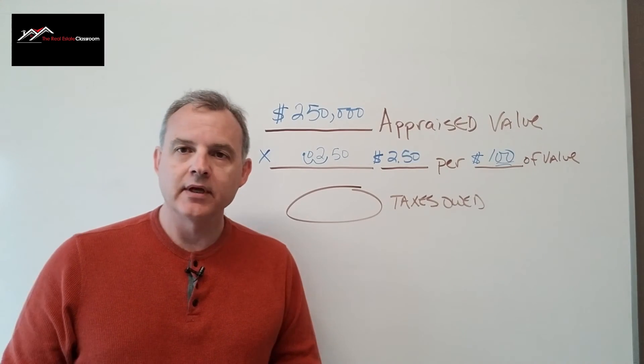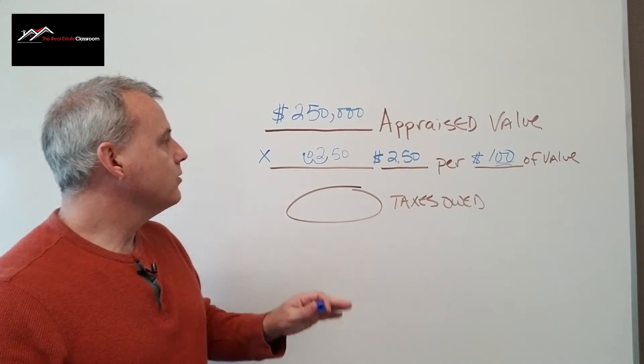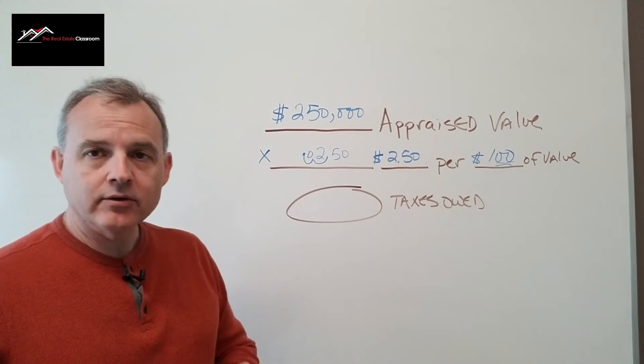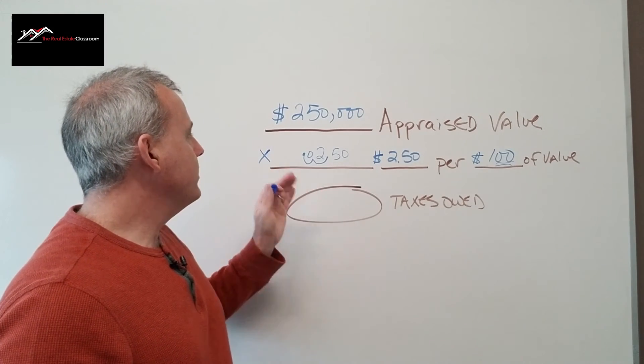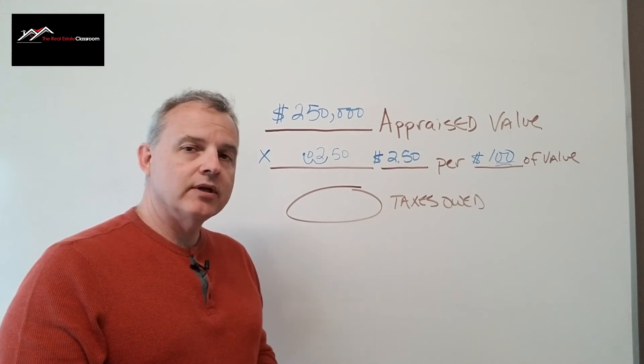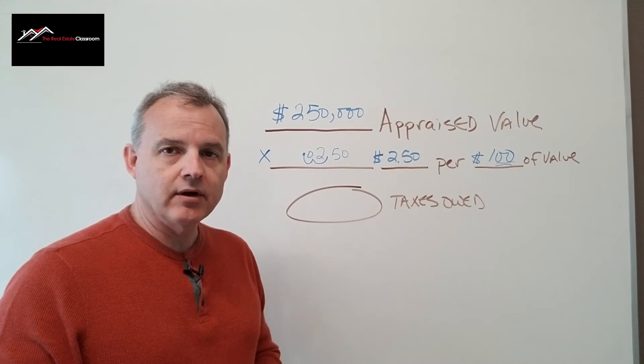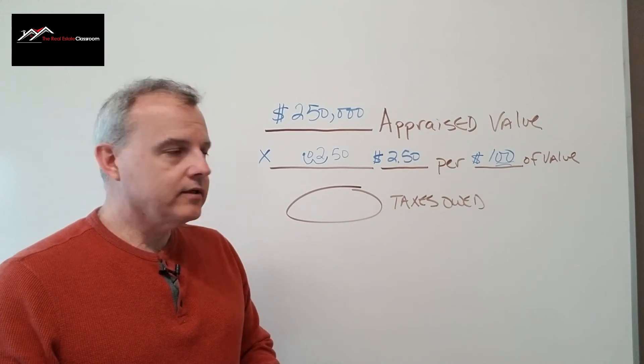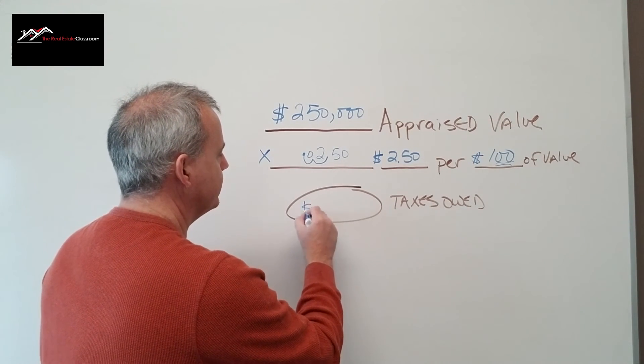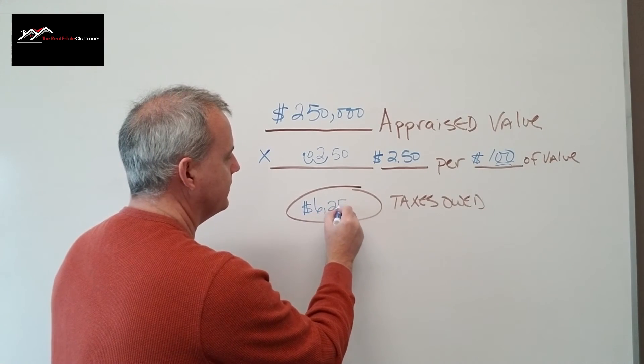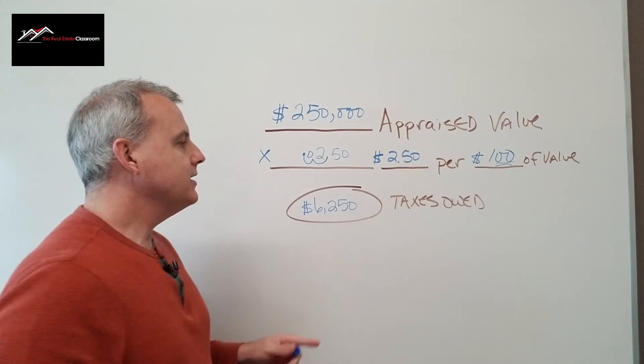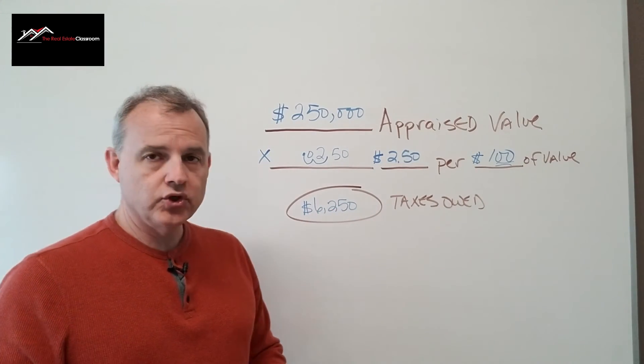That's just a little bit of third grade math there. We're going to take $250,000 and multiply it by 0.0250. That gives us a tax calculation of $6,250.